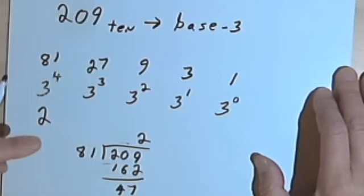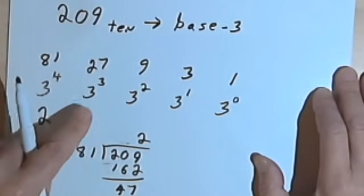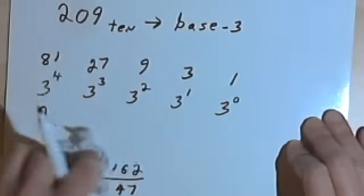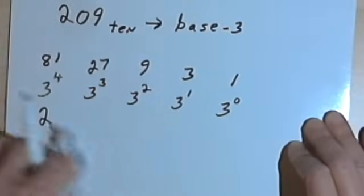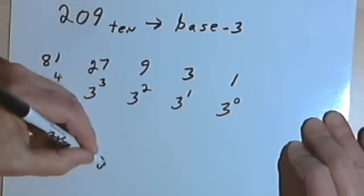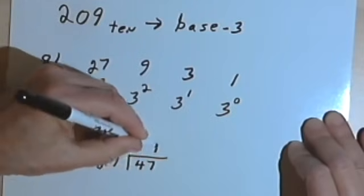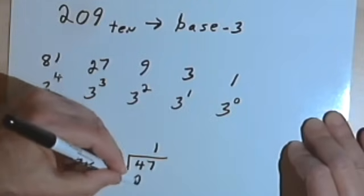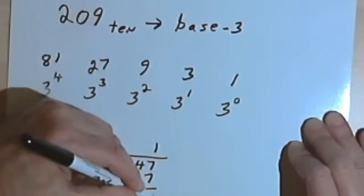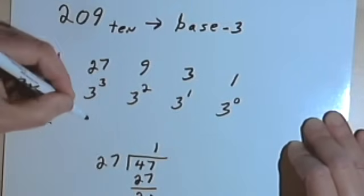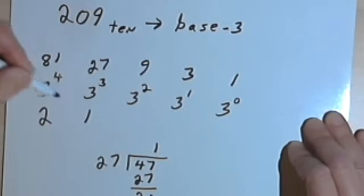Now I want to divide 3 to the 3rd, or 27, into the remainder, which was 47. 27 goes into 47 one time, and I have a remainder of 20. So that means in the 3 to the 3rd column, I'll just have a 1.